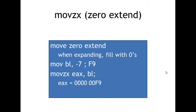Sign extend looks at that most significant bit and extends it — whether it's a zero or a one — into all of the bits of that larger register we're moving into. Zero extend doesn't do that; it simply zero-extends zeros into that register.